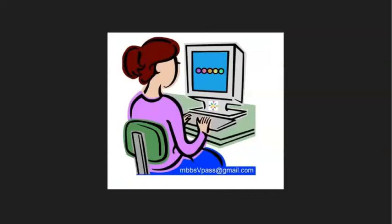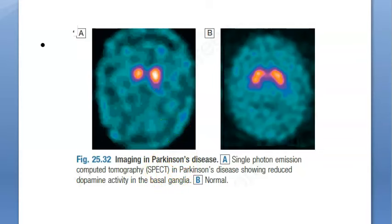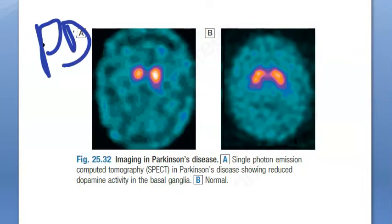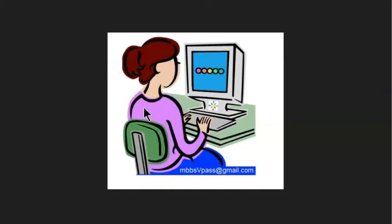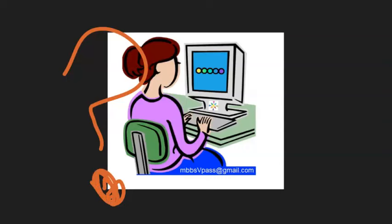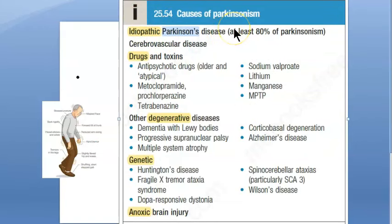Now what exactly is happening in idiopathic Parkinson's disease? In Parkinson's disease, what is affected is the substantia nigra — part of the basal ganglia. There is reduced dopamine activity there. The dopamine is supposed to be made in the substantia nigra but it is not being made sufficiently. Since we don't know why, that is why it is called idiopathic.